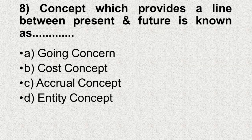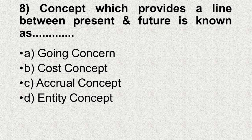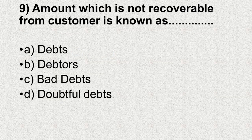Question number 8. The concept which provides a line between present and future is known as — Option A: Going concern, B: Cost concept, C: Accrual concept, D: Entity concept. And the correct answer is A, Going concern.